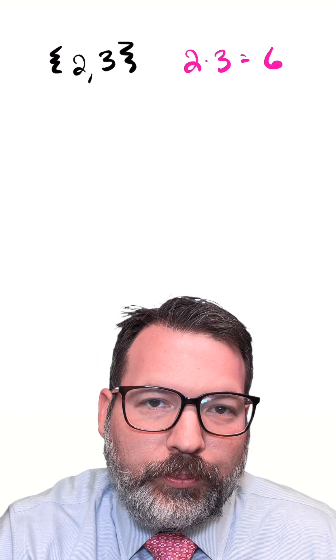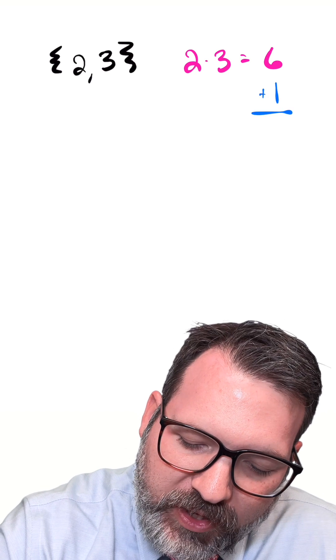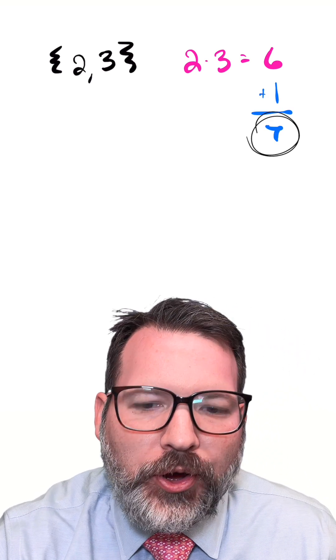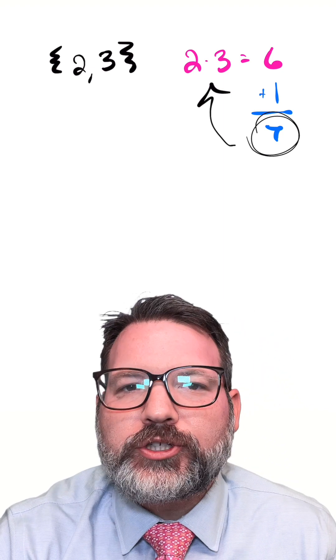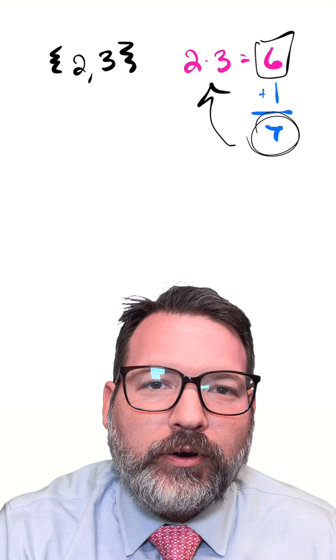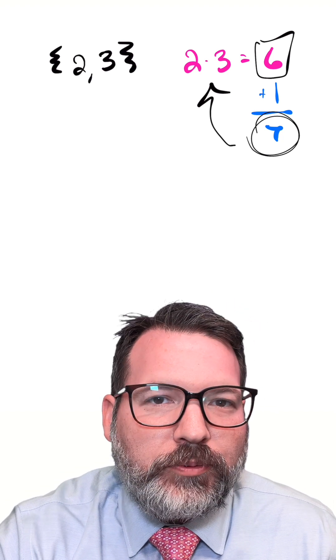Which is why we call them composite numbers. But if we add one to one of these composite numbers, we're always going to generate a new number that's no longer a multiple of the original primes we used to compose, in this case, six. And if it's no longer a multiple of two or three, there are only two possibilities.